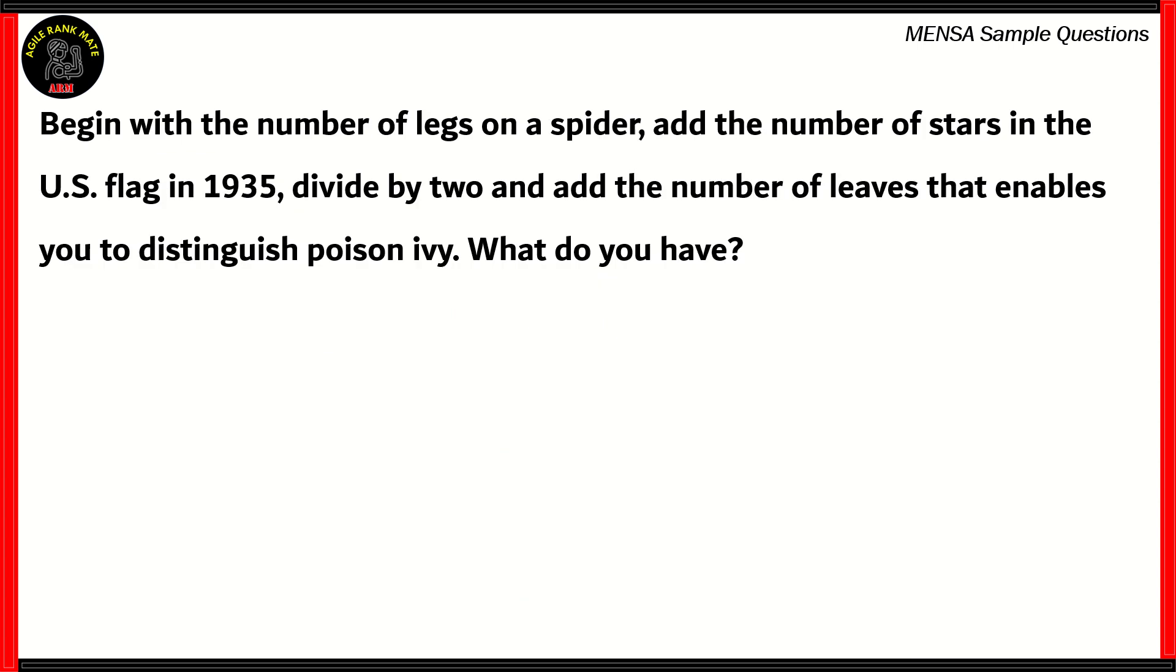Now let's look at the final question for the day. Here we have some objects from which numbers are taken and we need to find out a particular value. Begin with the number of legs on a spider. Add the number of stars in the US flag in 1935. Divide by two and add the number of leaves that enables you to distinguish poison ivy. We need to find out what is the resultant number that we get. So the number of legs on a spider is eight.